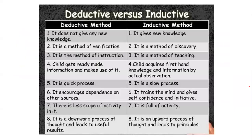Deductive model in teaching: no new knowledge is given; it is a method of verification; the child uses available information; it is a quick process; encourages dependence on other sources; limited scope for activity; it is a downward process. Inductive model: gives new knowledge; it is a method of discovery; the child gets first-hand experience; though slow, it trains the mind and gives self-confidence and initiative; it is full of activity; it is an upward process.